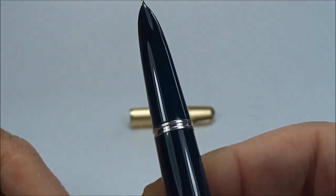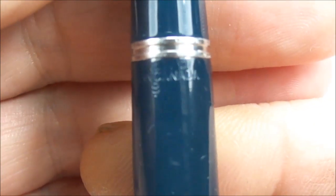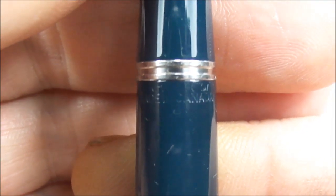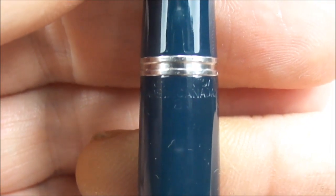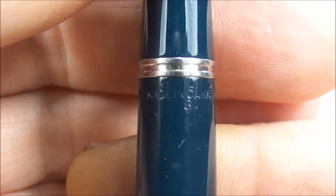Now, although the nib is dated 1948, if we show you the imprint to the top of the barrel there—again we need to keep it nice and still for you—I'm hoping you can actually see there the imprint clearly reads Parker 51. Underneath that it's got Made in Canada again.